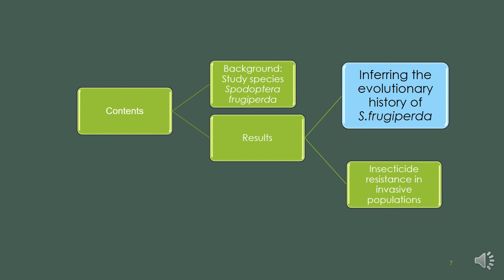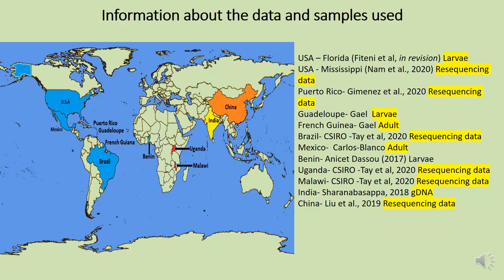Now let's look at the results of my first study, which is inferring the evolutionary history of the fall army worm. Here is a list of samples used and their information. We had samples from both the native and invasive populations, and the data was received in the form of larvae, resequencing data, and gDNA.